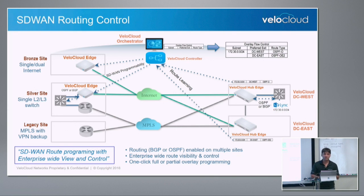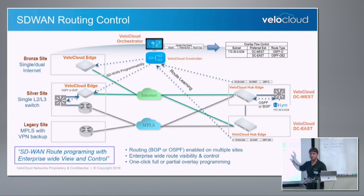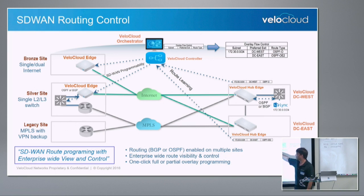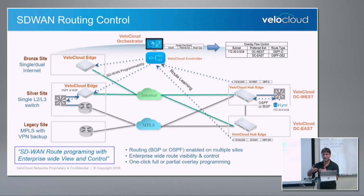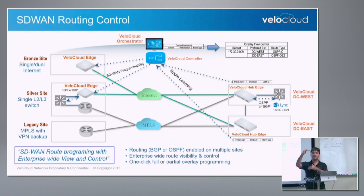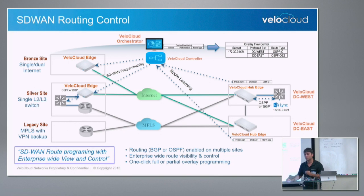SD-WAN routing has been done in a very unique way, and there is a good demo coming up right after this. On the hub side or branch side, BGP or OSPF can be enabled — we have support for both protocols. We automatically learn routes from the layer 3 switch, and all those routes are sent to a centralized controller, which acts like a route reflector and programs the remaining SD-WAN sites. We have taken a unique approach: standard-based routing on the LAN side, but with an enterprise-wide view. You don't need to go site by site to look up routing tables — you get enterprise-wide visibility and enterprise-wide control with a single click.